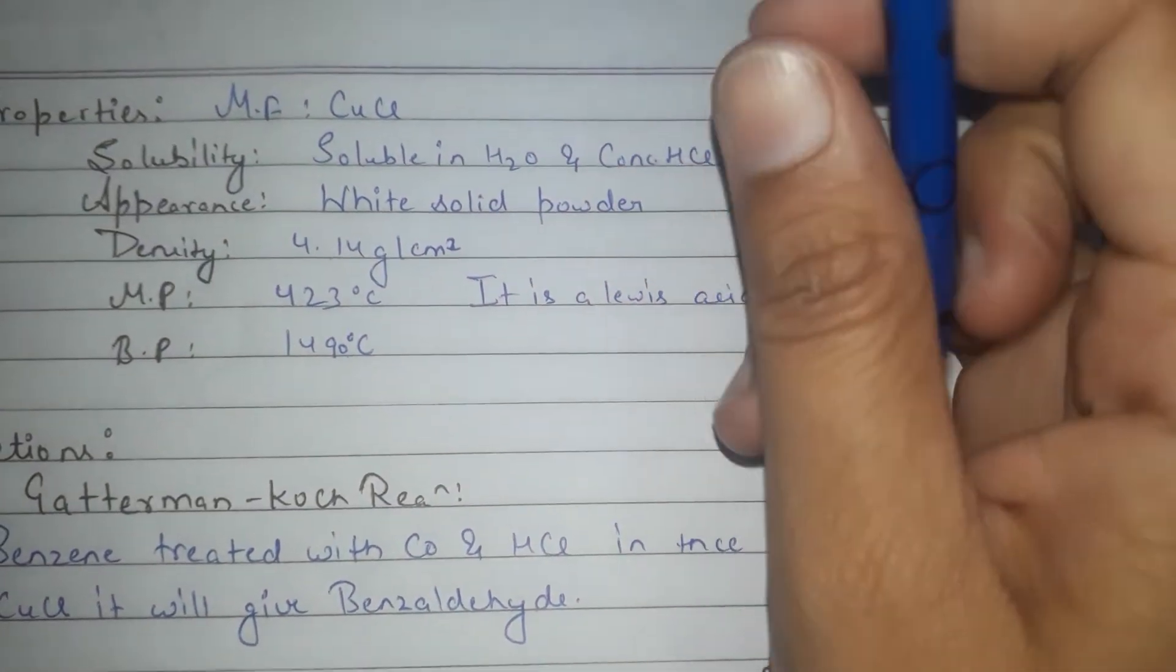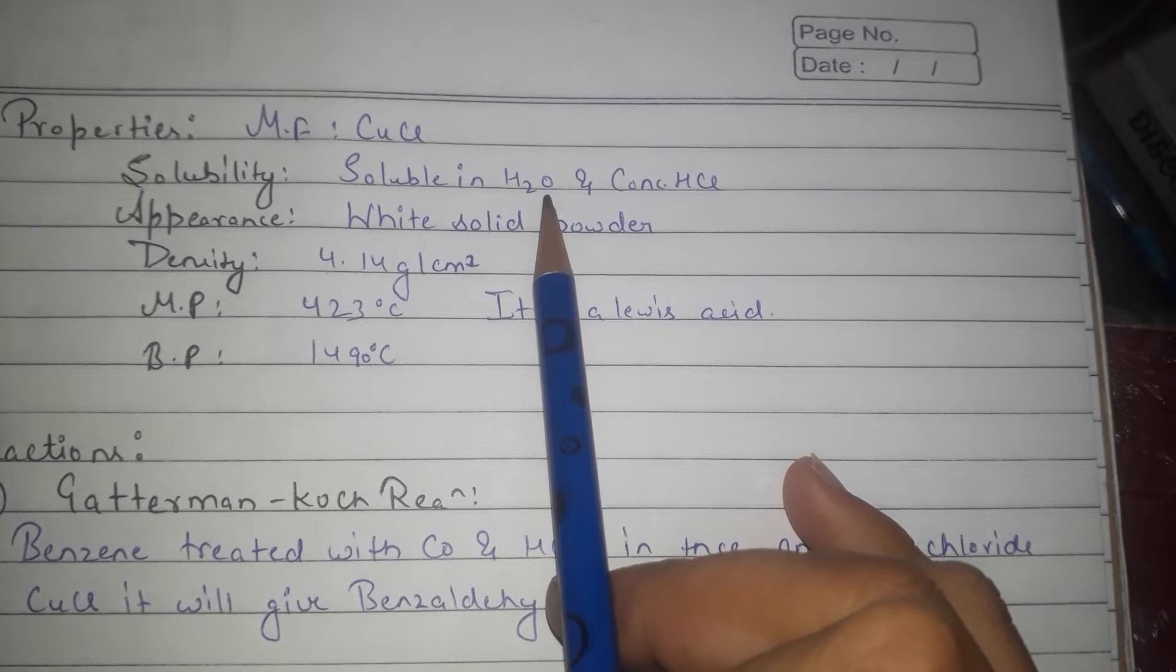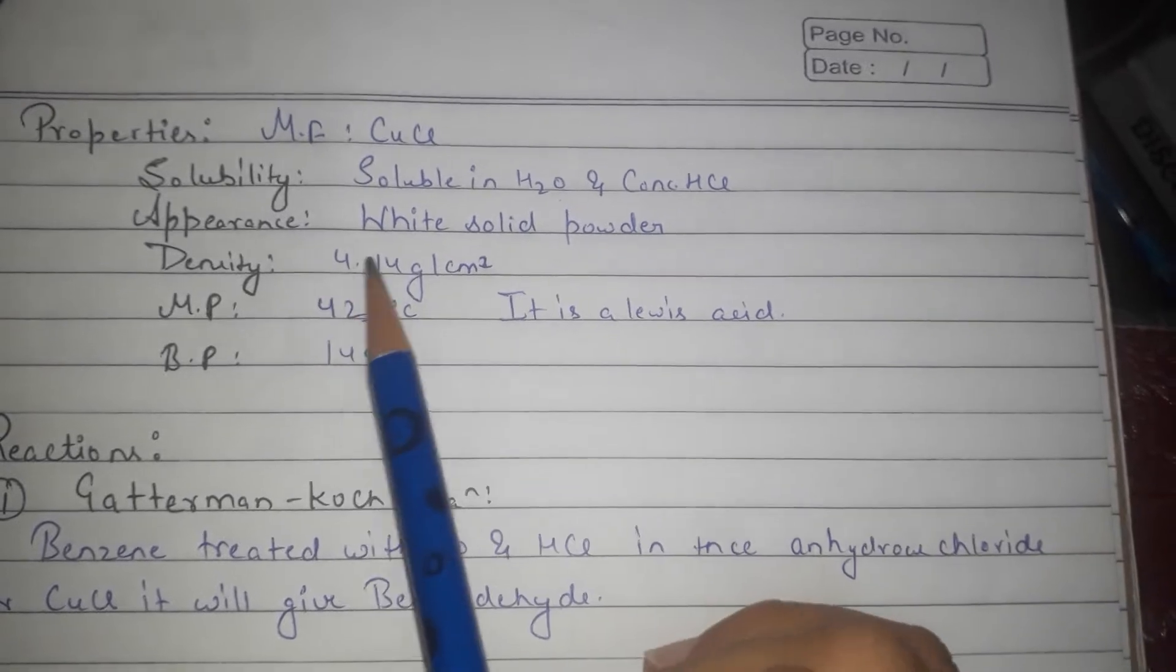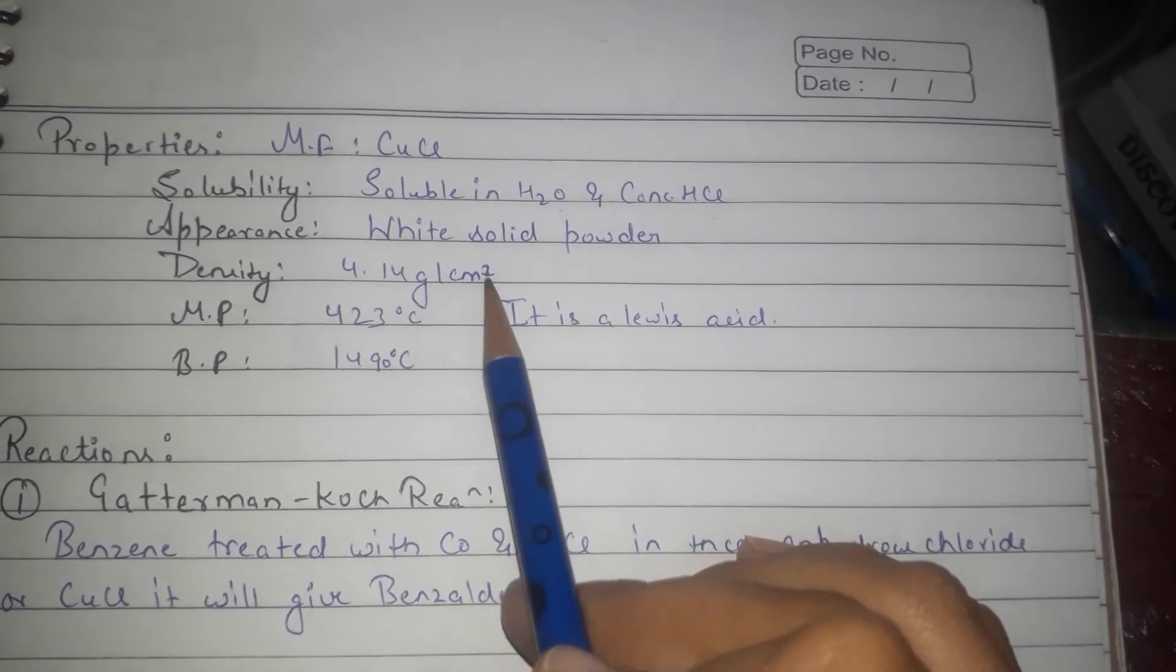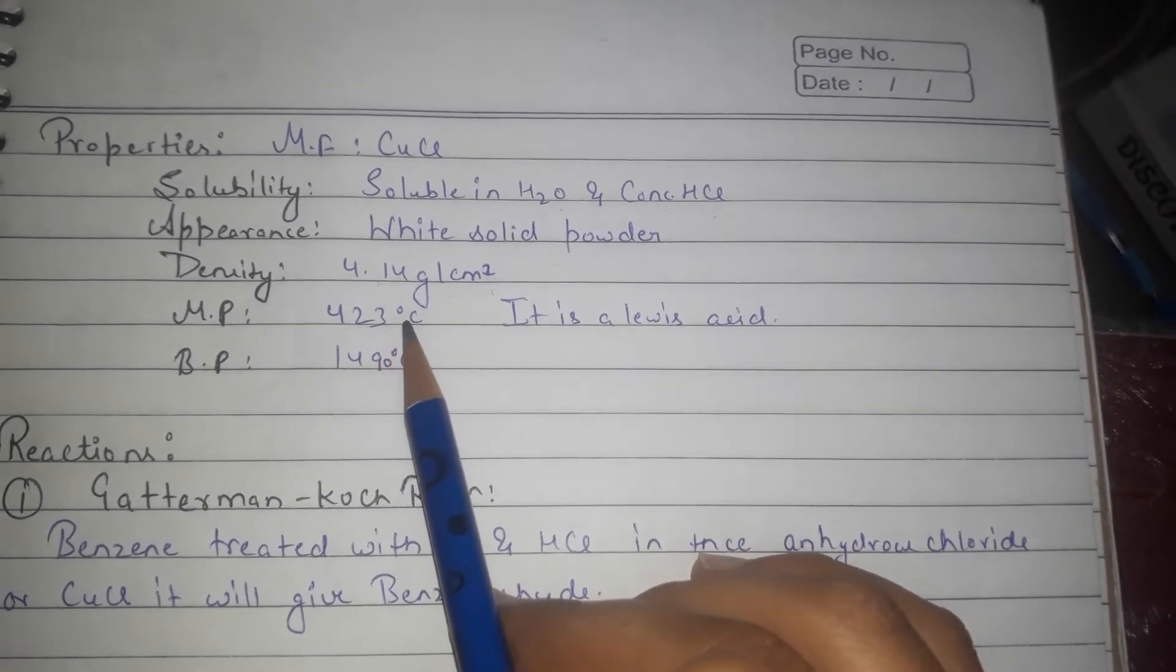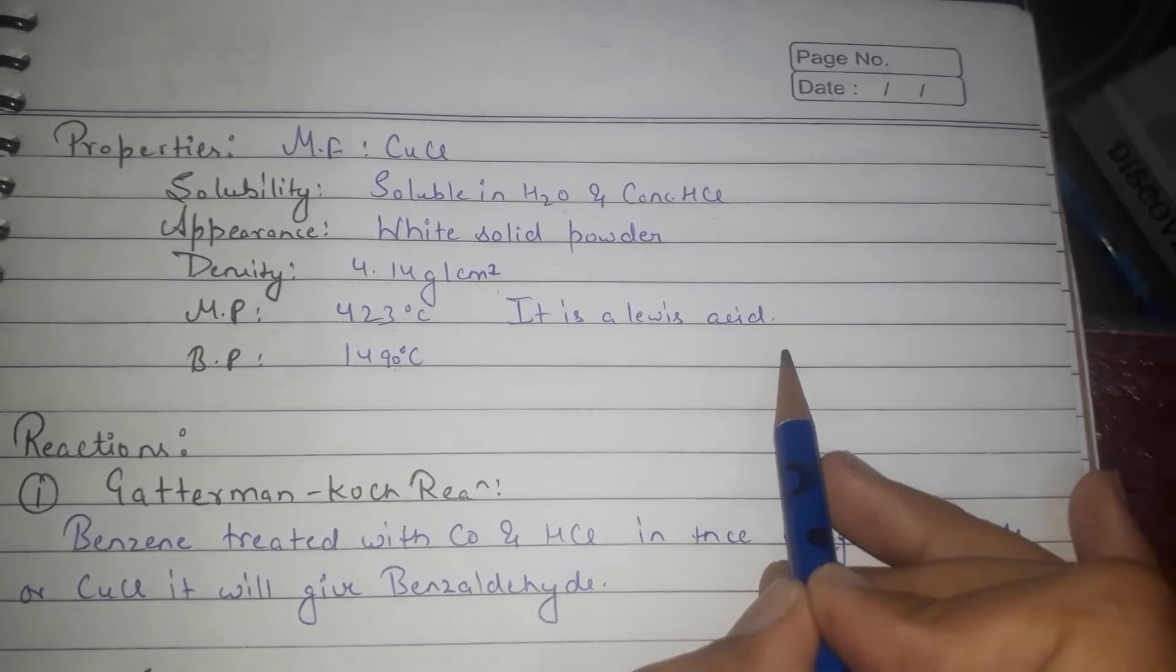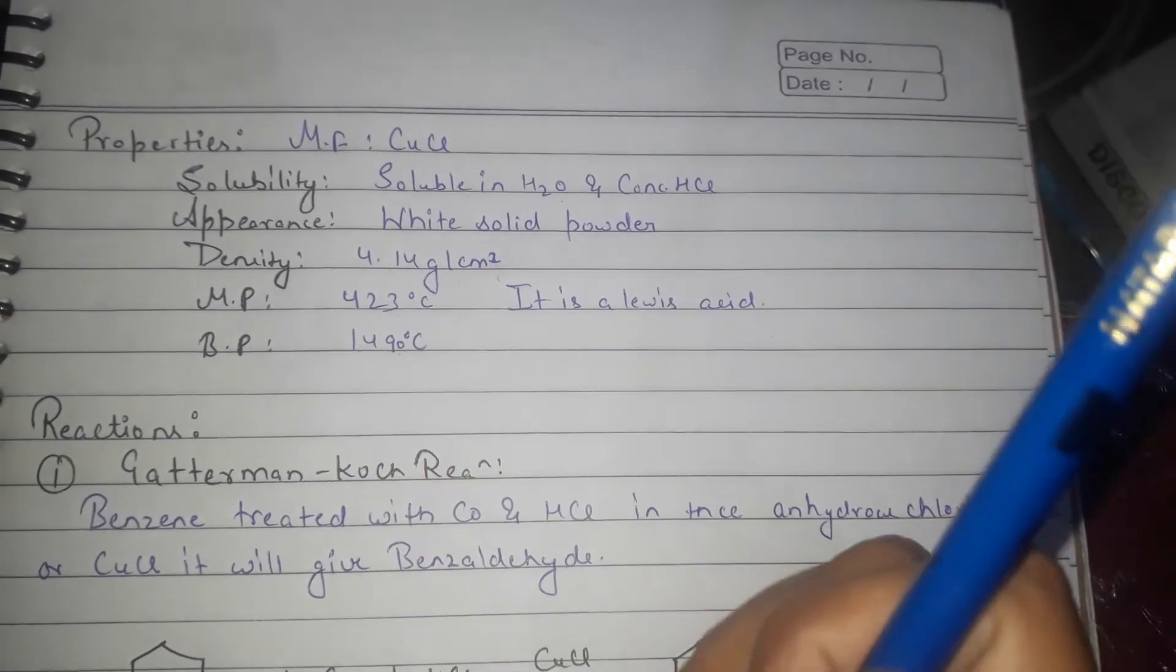Now some properties for cuprous chloride: generally it is soluble in water and concentrated HCl. Appearance: white solid powder. Density: 4.14 gram per centimeter cubed. Melting point: 423 degrees Celsius. Boiling point: 1490 degrees Celsius. And it is a Lewis acid.